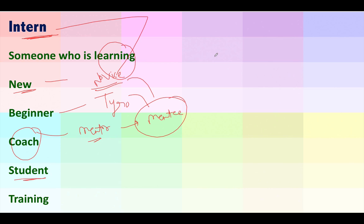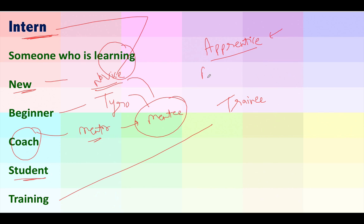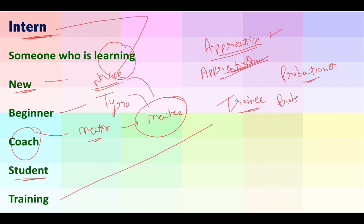There is another very important word: probationer. A probationer is also someone who is learning and is said to be on probation. For example, a probationary officer in a bank will learn the ropes for the first two years before being promoted. So the words intern, novice, Tyro, mentee, apprentice, probationer, and trainee all mean the same — they are exceptional words and that is how you need to connect them.